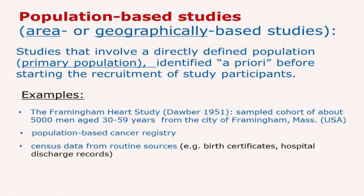A very famous example is the Framingham Heart Study. It was started in the 50s, and it involved sampling a cohort of about 5,000 men aged 30-59 years from the city of Framingham, in Massachusetts. This cohort was then followed up, and it is still under follow-up.